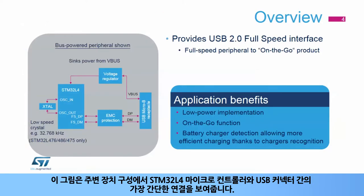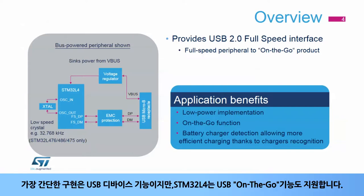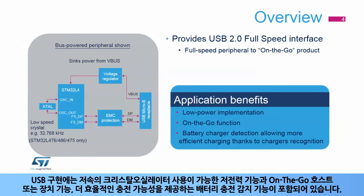This figure shows the simplest connections between an STM32L4 microcontroller and a USB connector in a peripheral configuration. The STM32L4 features a full-speed USB communication interface, allowing the microcontroller to communicate typically with a PC or a USB storage device. The simplest implementation is a USB peripheral device, but the STM32L4 also supports on-the-go USB functions.